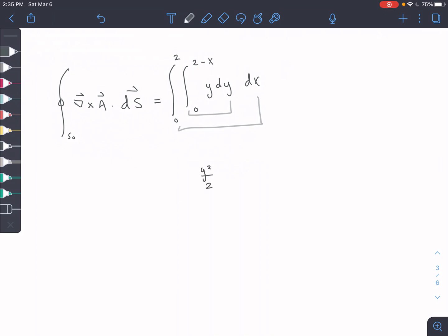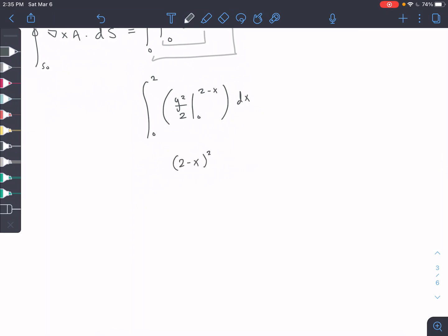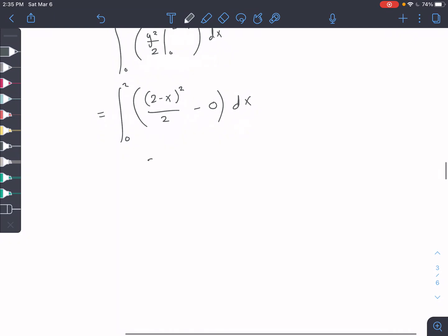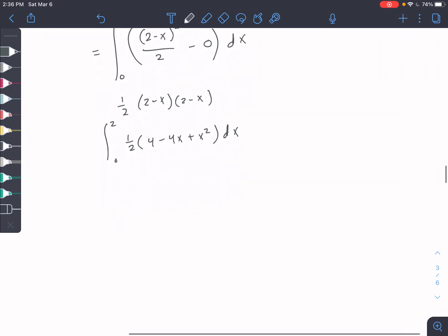So internal part first, right? Y squared over two, zero to two minus X. And we still have this integral with respect to X. So two minus X squared over two minus zero, right? Top bounds, bottom bounds. And let's go ahead and expand those terms there. So two minus X times two minus X. So minus four minus four X plus X squared. So two minus two X plus one half X squared DX.